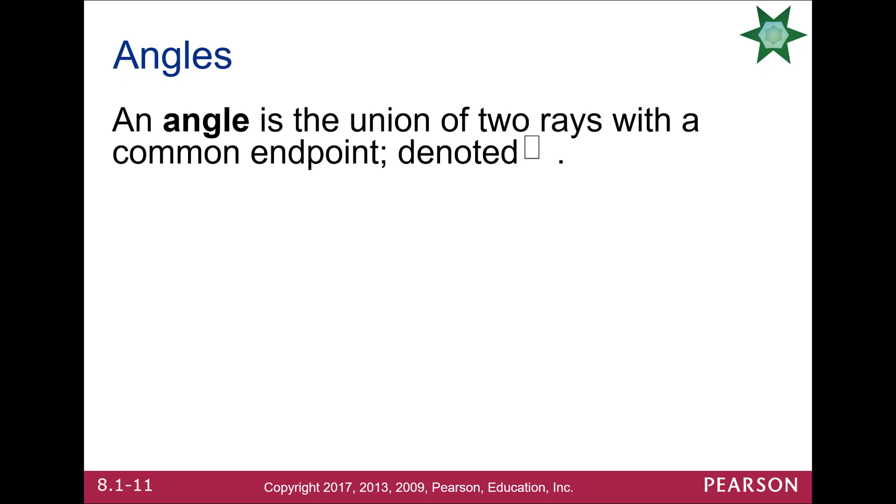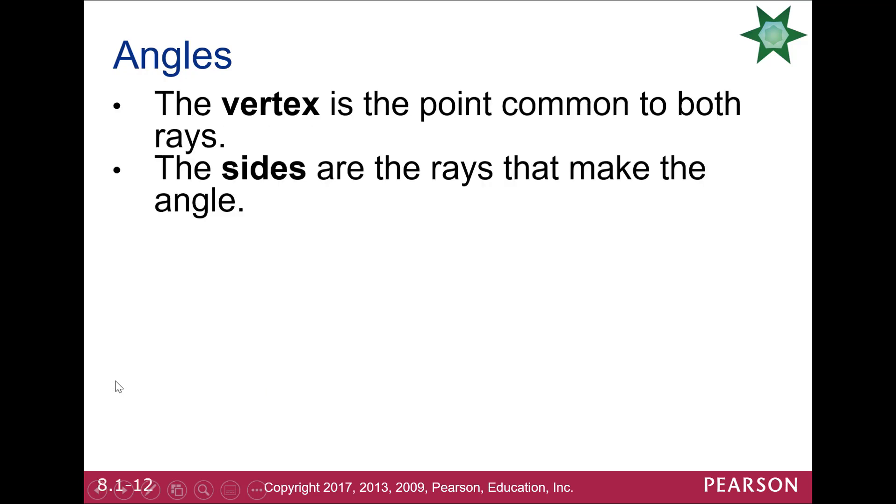Angles. If you have two rays that share a common endpoint, we call the endpoint the vertex, the initial side, the terminal side of the angle. This angle would be read ABC or CBA. Typically, we start with the initial side, but either one would be fine as long as the vertex is properly named. So those are the sides of the angle.